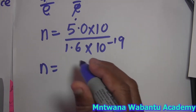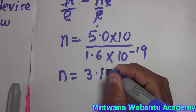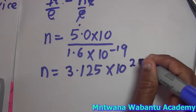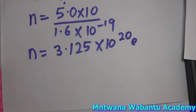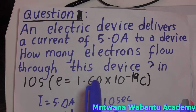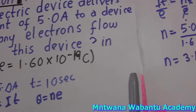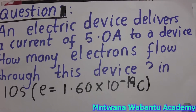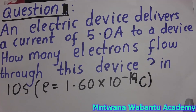If you plug that in, that's going to give you 3.125 times 10 to the power of positive 20 electrons. So the number of electrons that flow through this device is 3.125 times 10 to the 20 electrons.